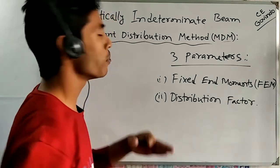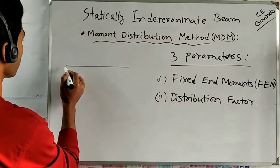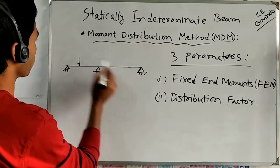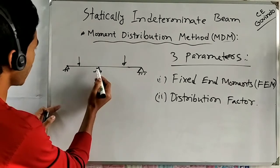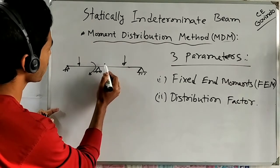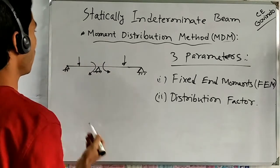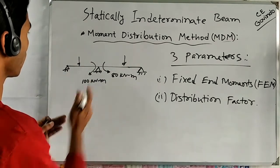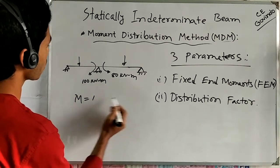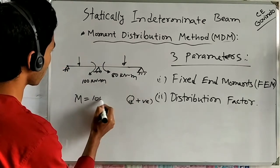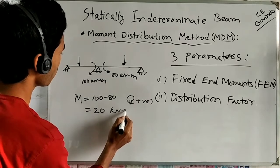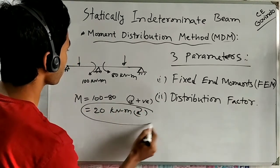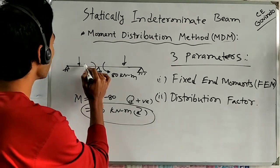The Distribution Factor is the factor by which a moment is distributed at a joint. Consider a beam A-B-C with applied loads; at support point B there will be moments from each side. If one moment is 100 and the other is 80, there is an unbalanced moment. Taking clockwise as positive, the unbalanced moment is 100 minus 80, giving 20 kilonewton-meters.